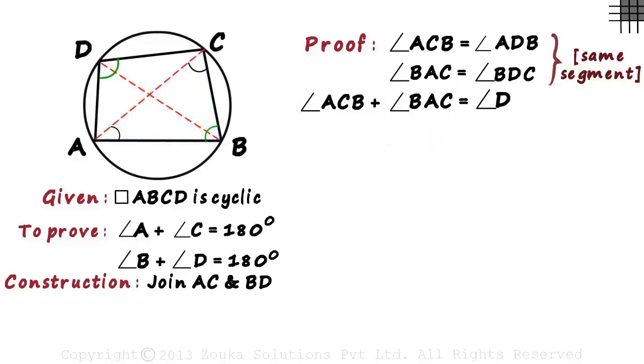When we add angle ABC to the left hand side, we also have to add it to the right hand side. So we add angle ABC to both sides. This was one of the most crucial steps in this proof.